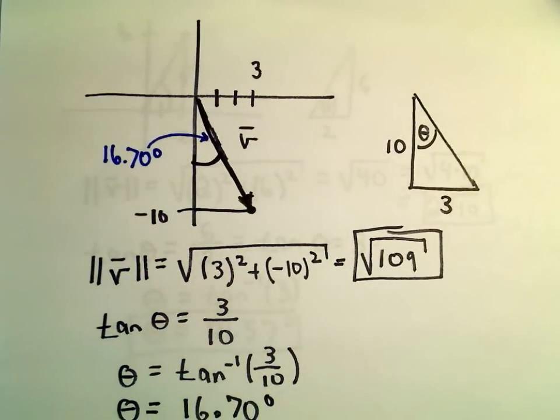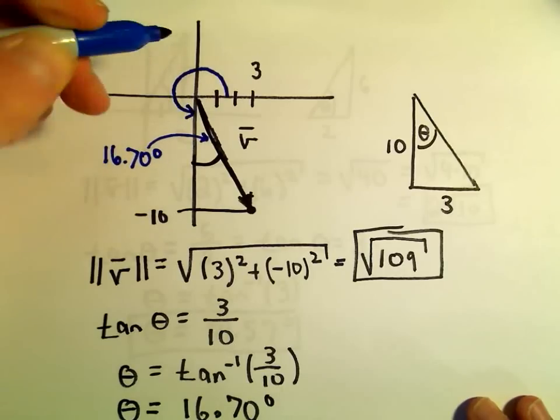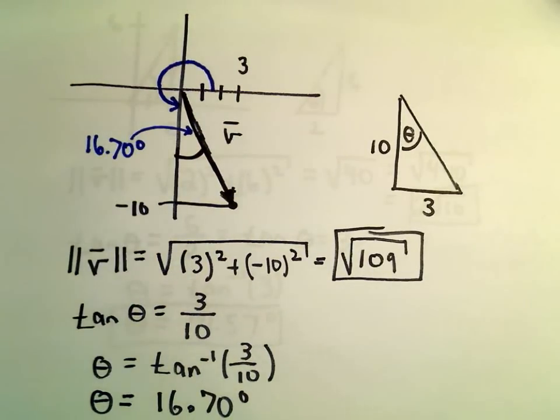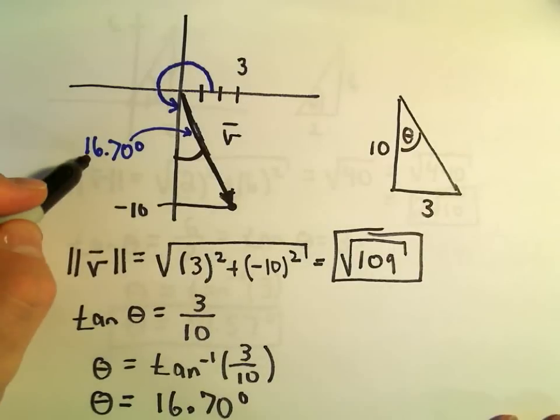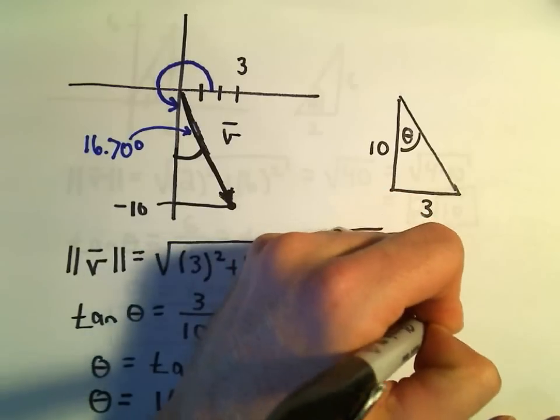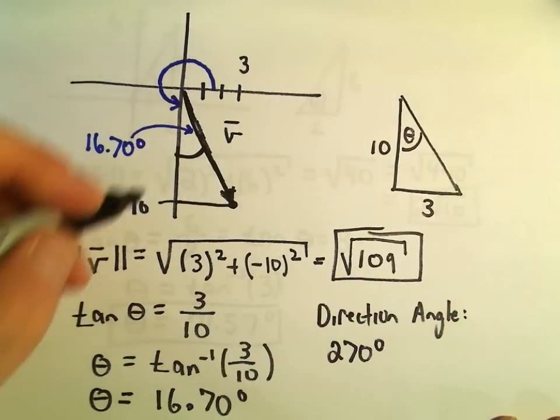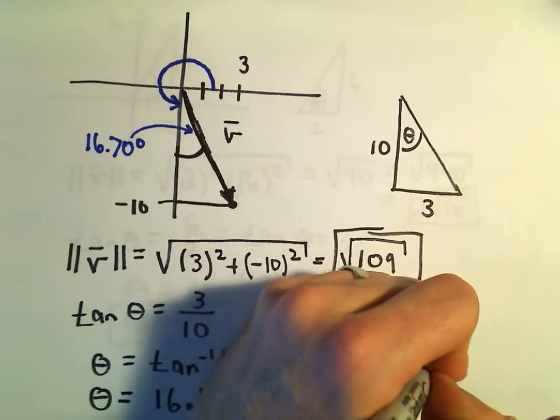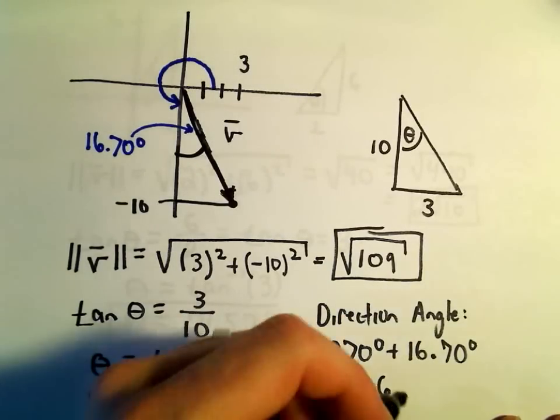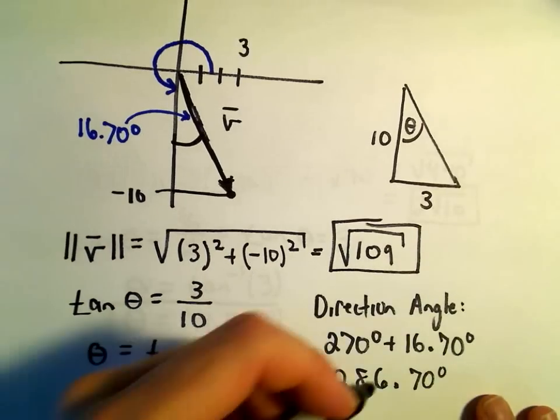And, again, now the way I think about it is, well, if we went all the way around to the sort of the negative y-axis, that's an angle of 270 degrees. Well, then we would have to go an additional 16.70 degrees. So to figure out this direction angle, the direction angle would just be 270 degrees plus this little bit extra, 16.70 degrees. So to me, it looks like we would say that after adding up, the direction angle is just simply going to be 286.70 degrees.